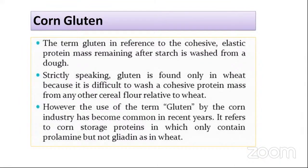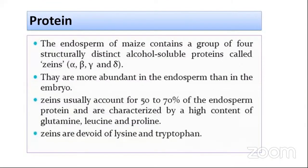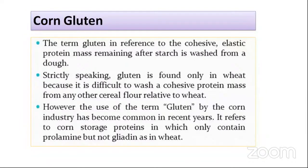A student asks for clarification on which protein fraction was being referred to and about the amino acid content. The instructor clarifies: the higher amounts of amino acids present are glutamine, leucine, and proline, while the protein is deficient in lysine and tryptophan.